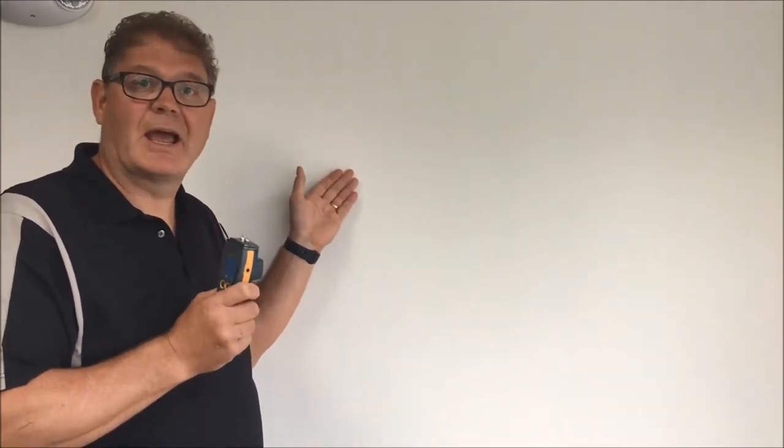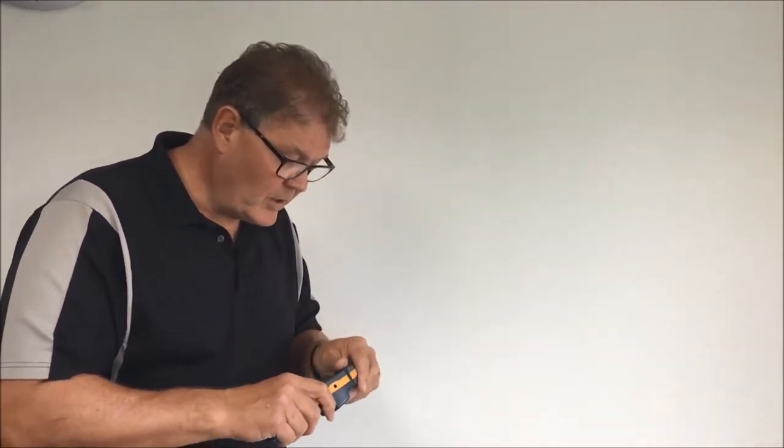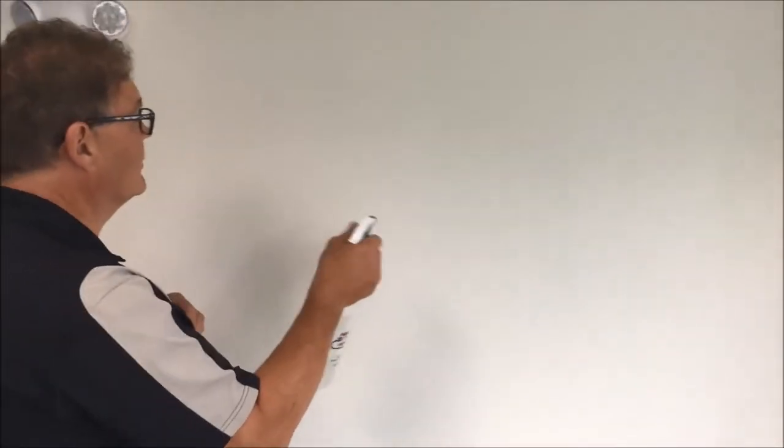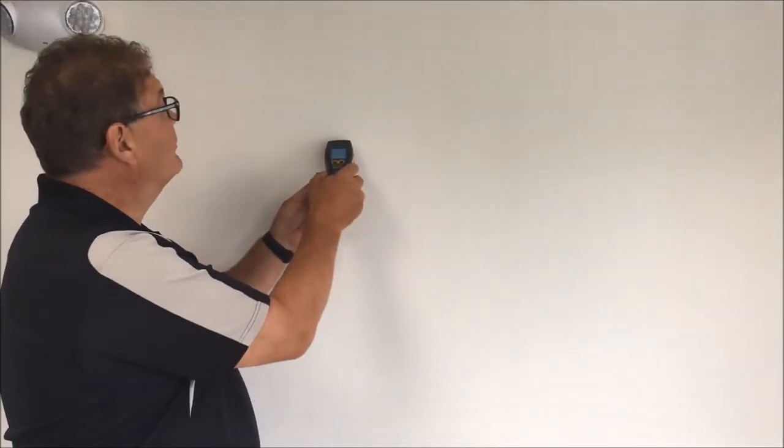Let's demonstrate how you would use this meter to detect whether that moisture is soaked throughout or just on the surface with condensation. To do this, I'm going to use a little spray of water on the wall here to imitate condensation, and then we'll go into pin mode and take a reading.